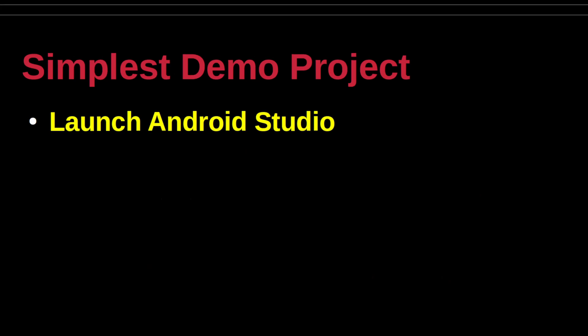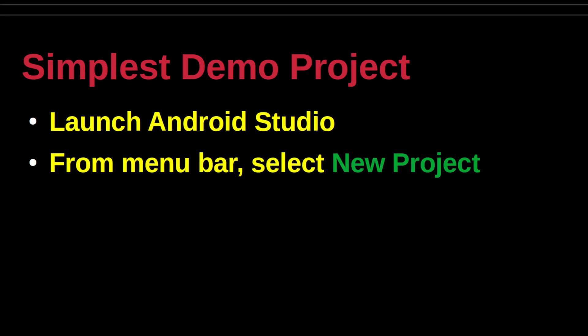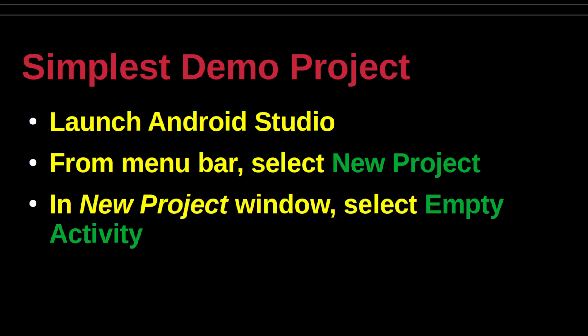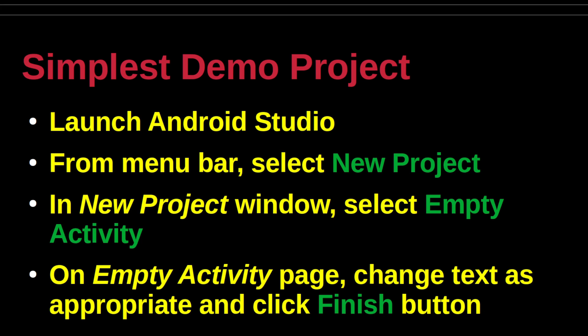Let us get started with the simplest task: creating an Android Studio project to illustrate the integration of OpenCV for Android apps. From the menu bar, select New Project. In the New Project window, select Empty Activity. In the Empty Activity page, change the text field values as appropriate. When all changes are complete, click the Finish button.